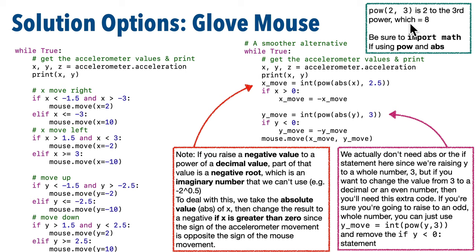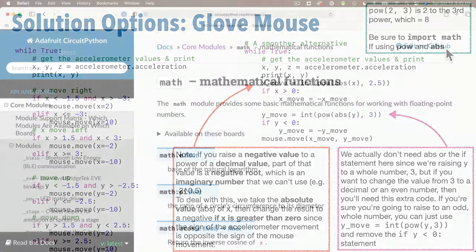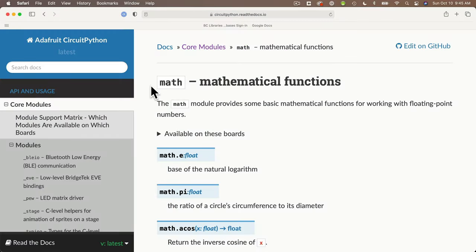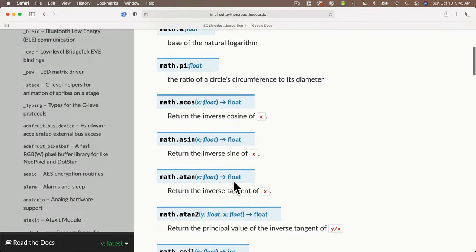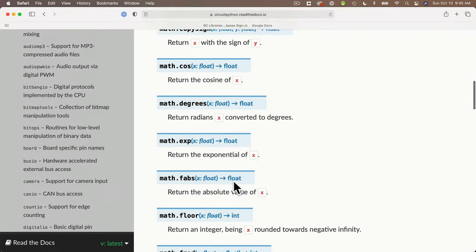To fix this, I experimented with raising the accelerometer coordinates to a power using the pow function. For example, pow(2, 3) is 2 raised to the third power, which is 8. pow is available in Python and it's built in, so you don't need to add a CircuitPython library to the lib folder, but you do have to import the math module. Math has all sorts of useful functions — absolute value, which we'll use in just a bit, sine, cosine. You can search online to see what's available.